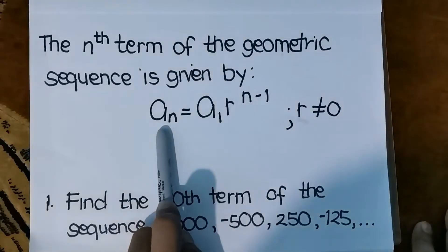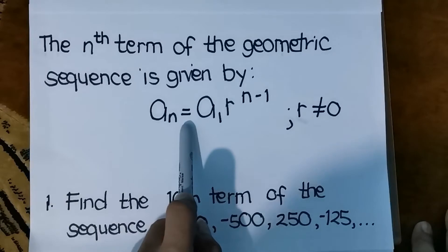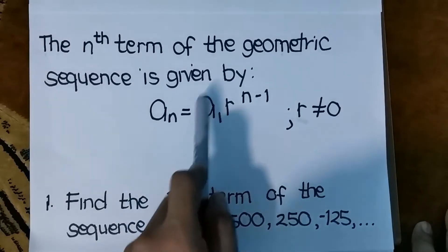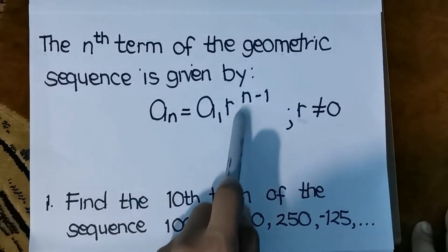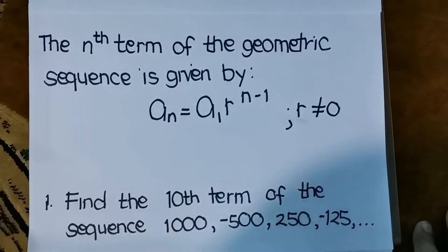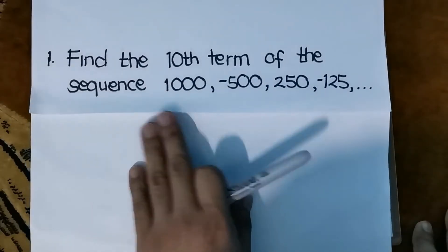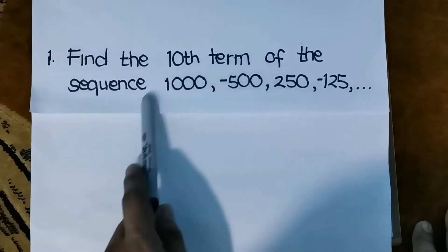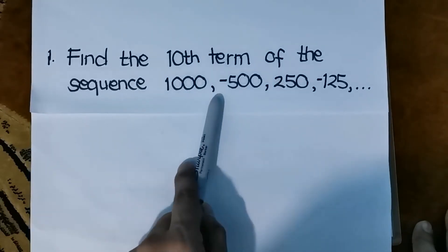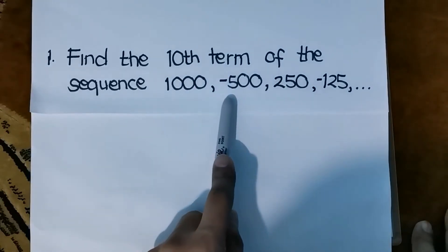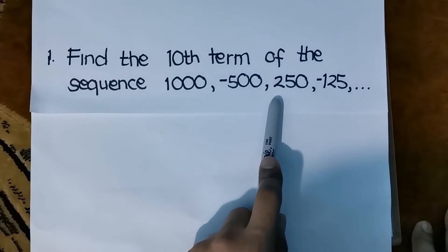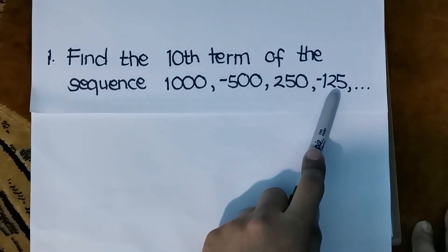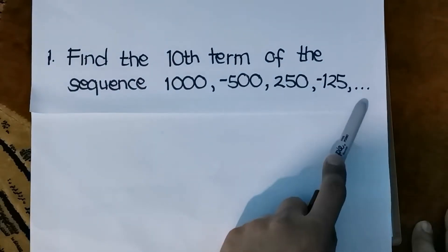Remember the formula: a sub n equals a sub 1 times r raised to n minus 1. For example, find the 10th term of the sequence: 1,000, negative 500, 250, negative 125, and so on.